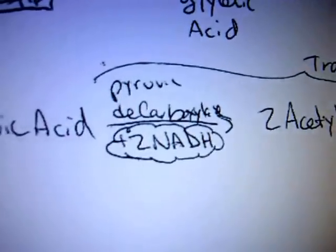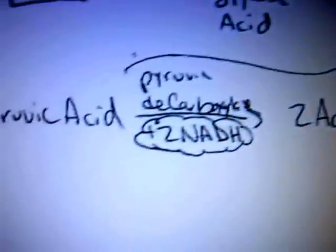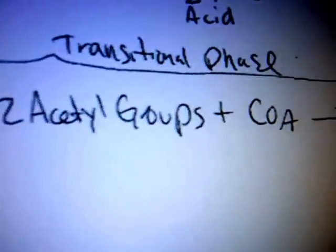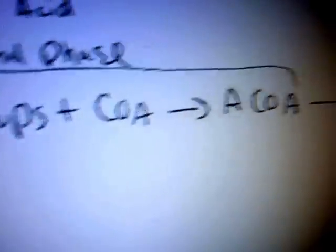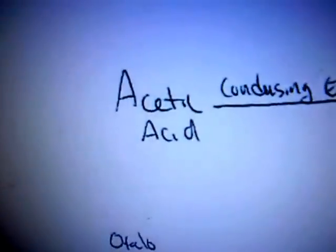Boom. We're going to jump right into transitional phase. Pyruvic decarboxylase, which is going to give us another two NADHs, is going to turn those pyruvic acids into two acetyl groups, which will then bind with coenzyme A into acetyl coenzyme A, which is the shuttle bus, take us right here to acetic acid, right to the Krebs cycle.